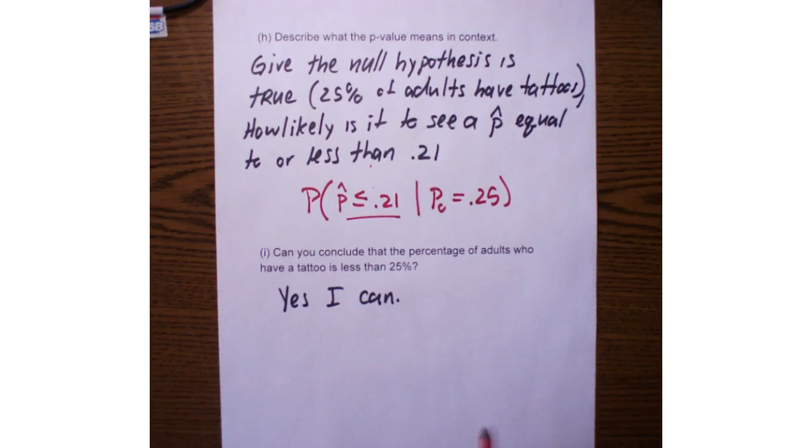And can I conclude that percentage of adults who have a tattoo is less than 25%? Yes, I can conclude that. My P value was very small, smaller than my alpha level, so I rejected my null hypothesis. I'm going to conclude that it was less than 25%. I could have made an error. I could have made a mistake. This could be a type 1 error, but we'll talk more about errors later this week.